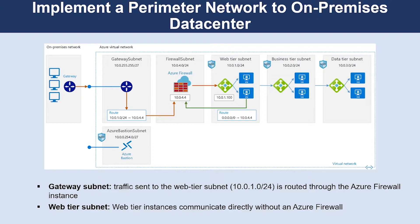This architecture requires a connection to your on-premises data center using either a VPN gateway or an Azure ExpressRoute connection. Typical uses include hybrid applications where workloads run partially on-premises and partially in Azure, and infrastructure that requires granular control over traffic entering an Azure virtual network from an on-premises data center.